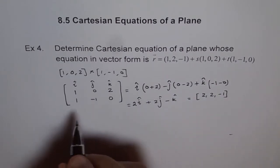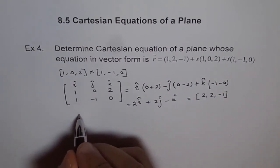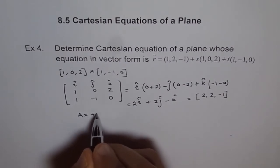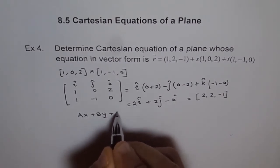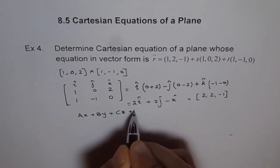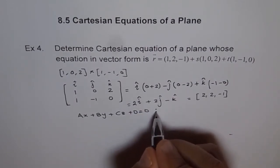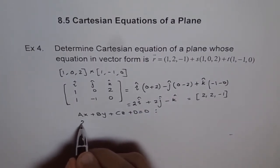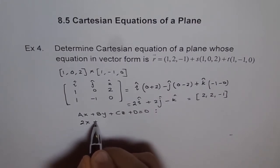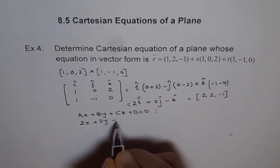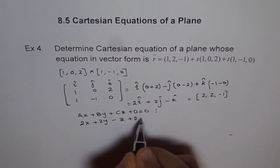We could write the Cartesian equation, which is AX plus BY plus CZ plus D equals to 0 as A is 2. So, we get 2X plus 2Y minus Z plus D equals to 0.